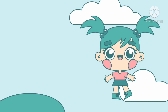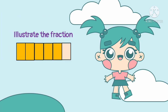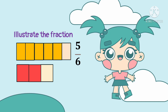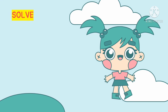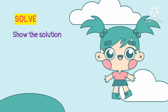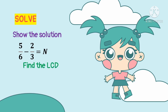Using an illustration to show the fractions: this is 5/6 liter of yellow paint, and this is 2/3 liter of red paint. Now we solve: 5/6 minus 2/3 equals N. The two fractions are dissimilar fractions, so first we need to find the LCD. Let's find the LCD of 6 and 3 using continuous division.